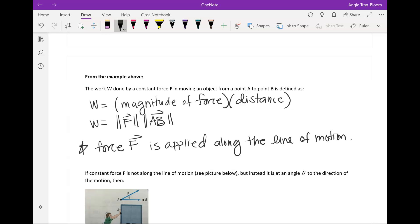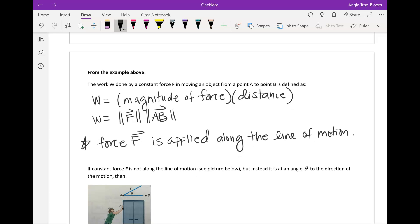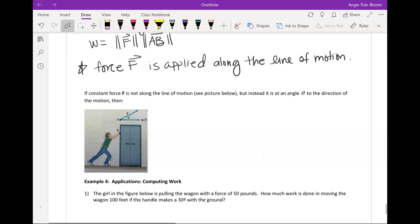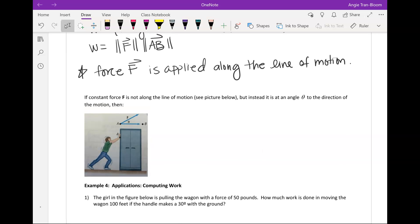This formula is only for horizontal, which is the force that's applying along the line of motion. Now, what if the force is not horizontal? What if the force is not along the line of motion? For example, if we were moving something and we were pushing it upward or downward.